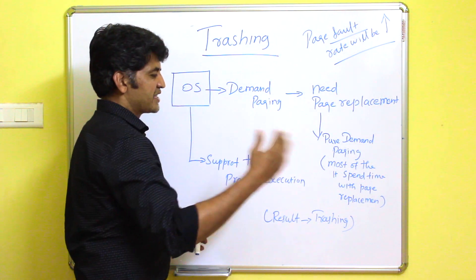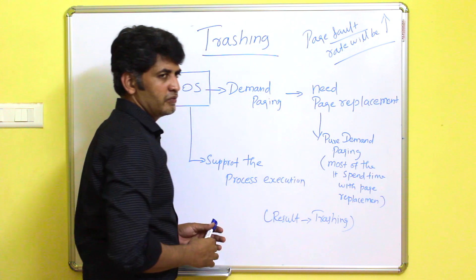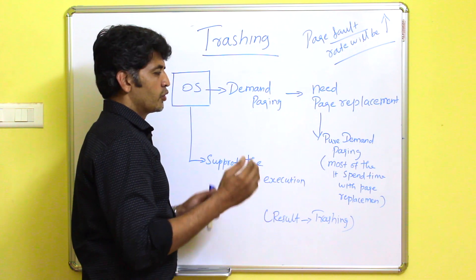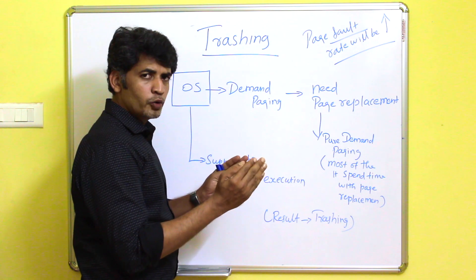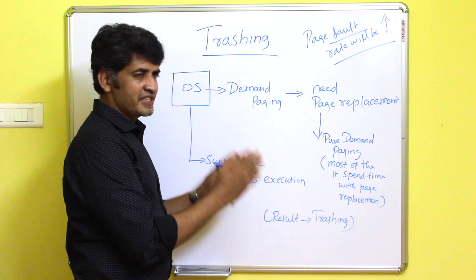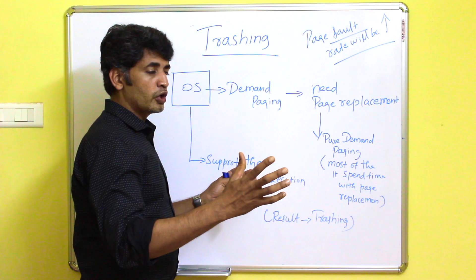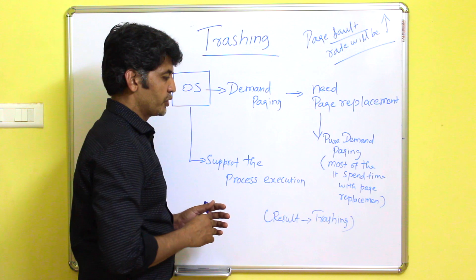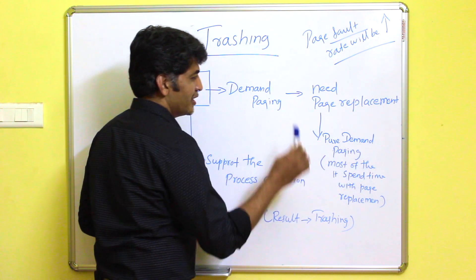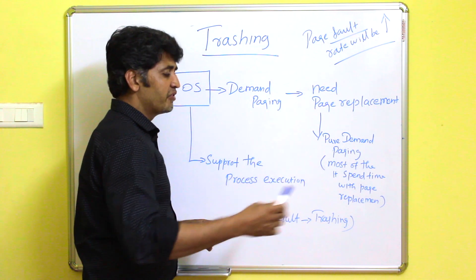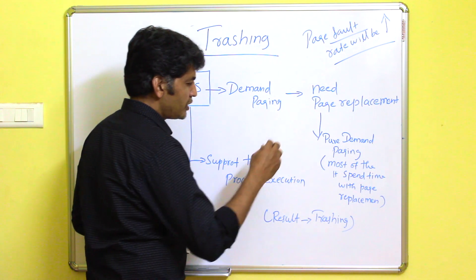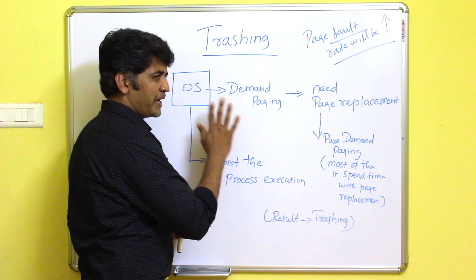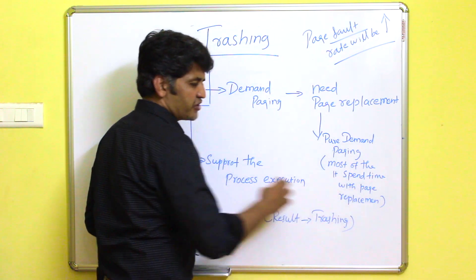Demand paging requires page replacement. With pure demand paging, it always ends up with page faults, because a smaller amount of information will be in physical memory and the larger amount of information will be in the secondary memory. So pure demand paging may require a large number of page replacements, and the operating system may spend most of its time on page replacement.